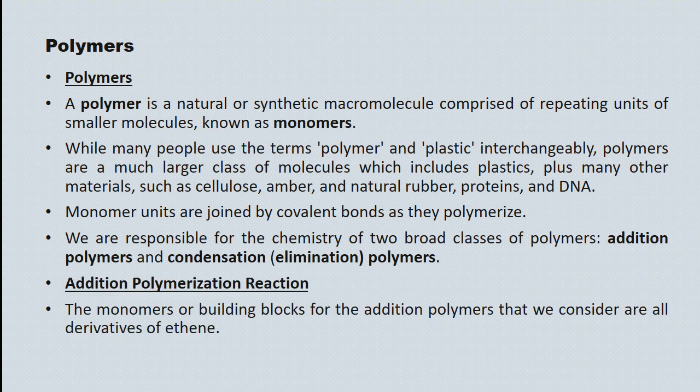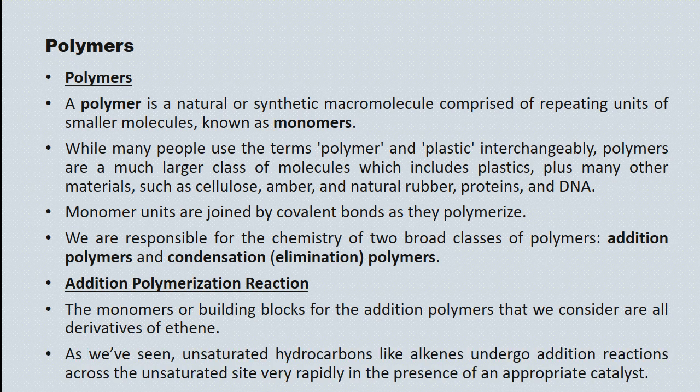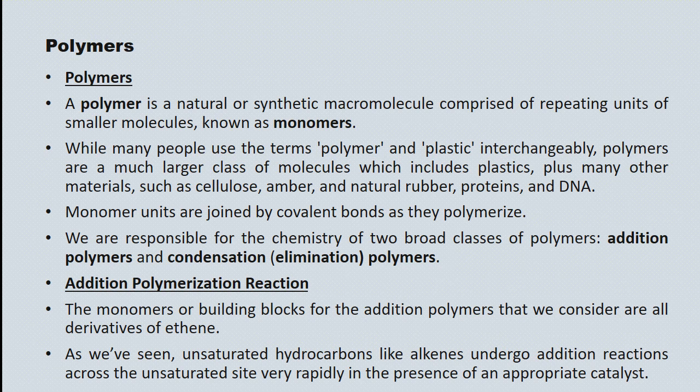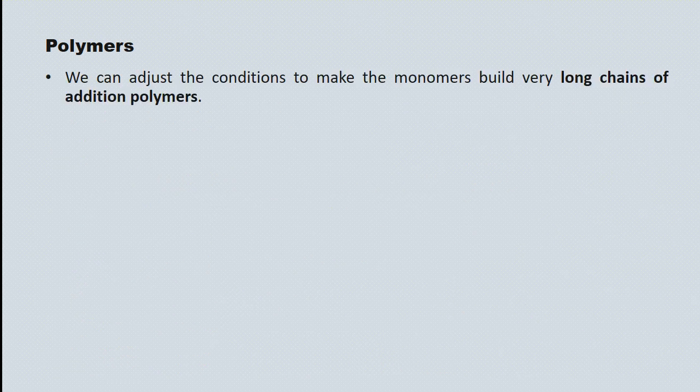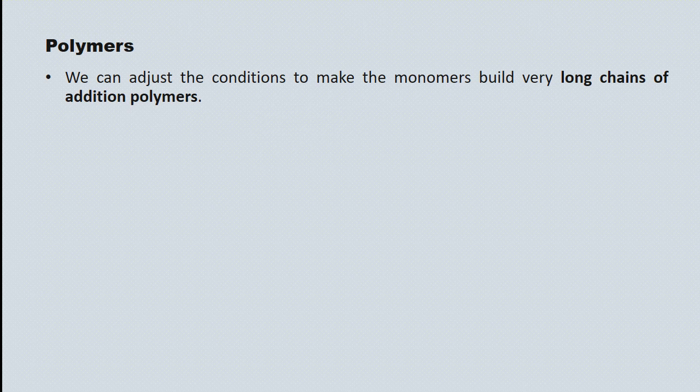Addition polymerization reaction. Typically, the monomer or building blocks for any addition polymer is some derivative of ethene. And I've mentioned this previously. Ethene is incredibly valuable in terms of industrial processes. And this is what I was referring to. As we've already seen, unsaturated hydrocarbons like alkenes undergo a rapid addition reaction under appropriate catalytic conditions. What happens is the double bond is converted into a single bond, and either an atom or a small molecule is added on both sides of the double bond. If we adjust the conditions, we can make monomers build very long chains of addition polymers. Literally thousands upon thousands of polymer units can be attached end-to-end in this fashion.